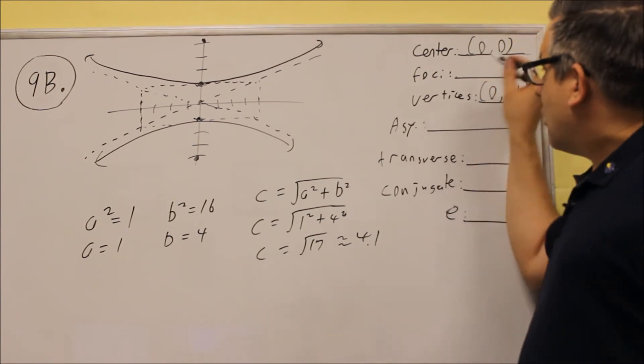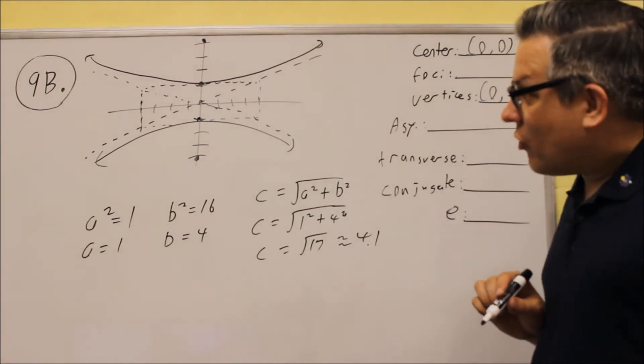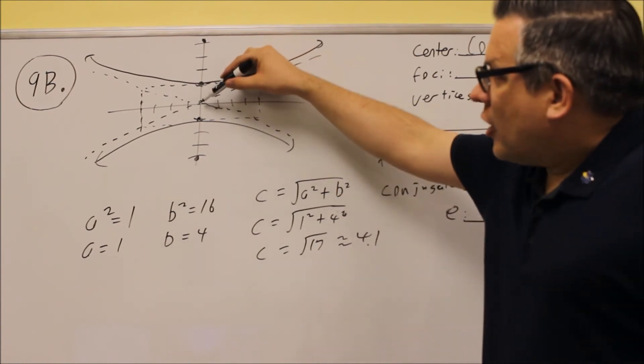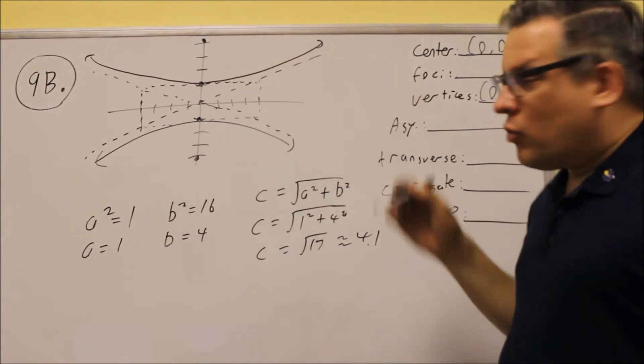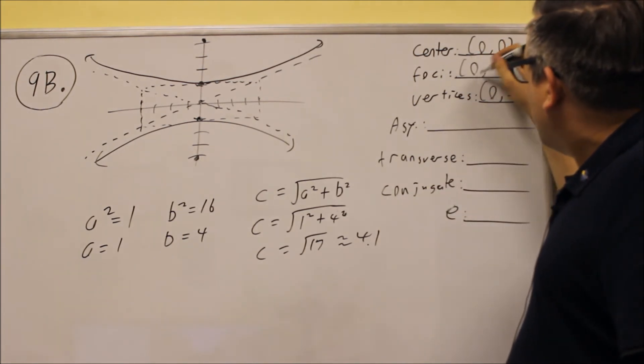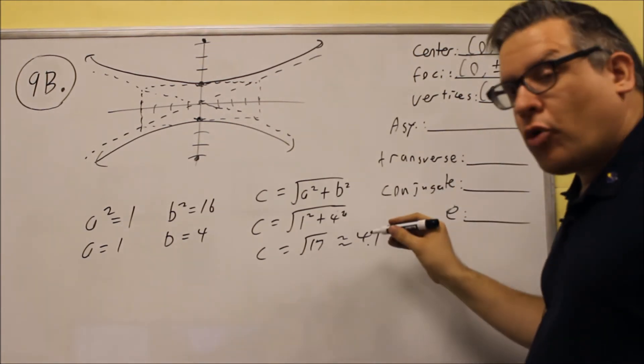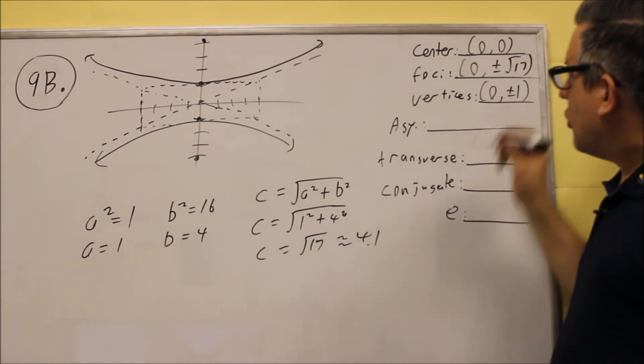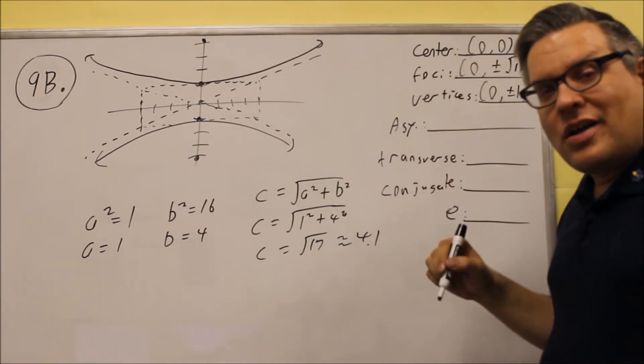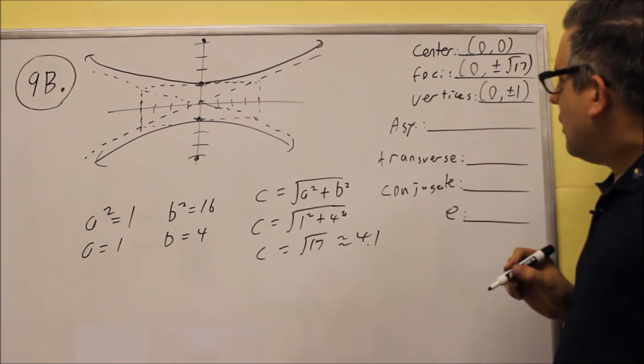So, now that we have this, we can complete with the coordinates of the foci. How we did that is we took 0, we went up 4.1, and we did down 4.1. And so, that's 0 plus or minus, instead of 4.1, we'll use the exact value, square root of 17. So, 0 plus square root of 17, 0 negative square root of 17.